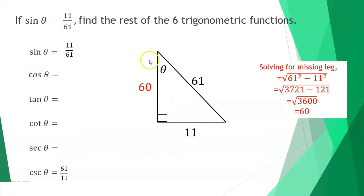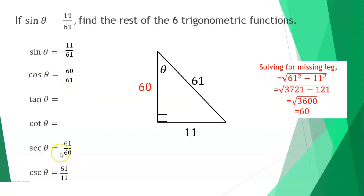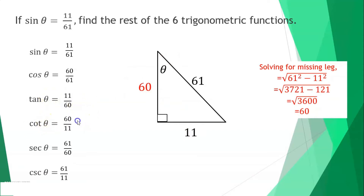With the missing leg of 60: cosine = 60/61, secant (inverse of cosine) = 61/60. Tangent = 11/60, and cotangent (inverse of tangent) = 60/11.